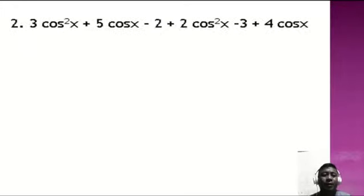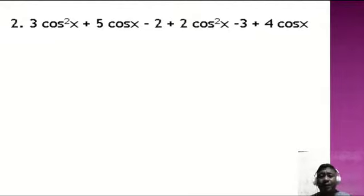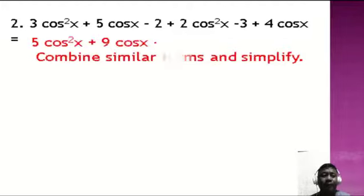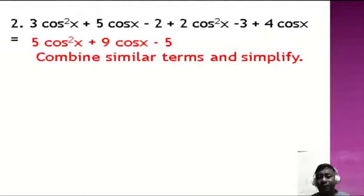Number two: 3 cosine squared x plus 5 cosine x minus 2 plus 2 cosine squared x minus 3 plus 4 cosine x. Combining similar terms, we get 5 cosine squared x plus 9 cosine x minus 5.